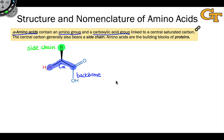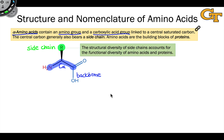That structural diversity in the side chain is really what's responsible for the functional diversity of amino acids and proteins, because as we polymerize the amino acids and put different side chains next to each other, emergent properties appear. For example, proteins fold up into unique shapes, creating binding sites for molecules, creating sites where chemical reactions can happen, and so on.